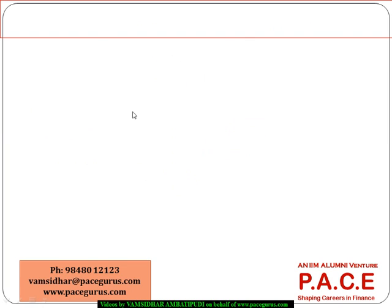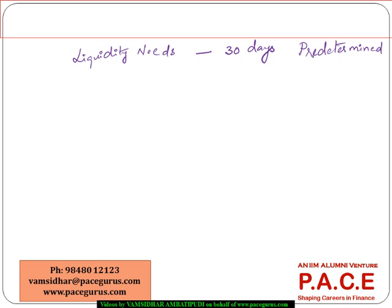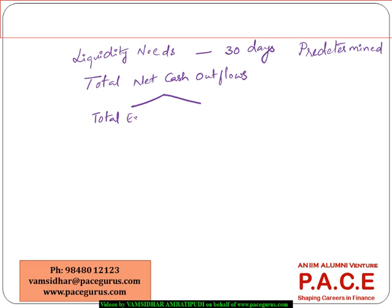What the LCR simply says is that the bank has to really understand its complete liquidity needs — specifically, the liquidity needs for the next 30 days under a presumed or predetermined stress scenario. This means the bank has to compute the total net cash outflows. The LCR defines total net cash flows as a function of two components: total expected cash flows in the next 30 days.